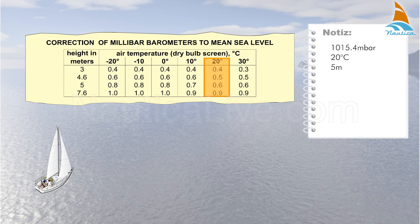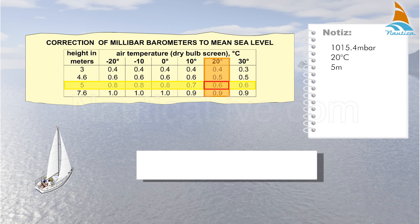By applying the air temperature and height above sea level to the chart, you see that the correction is 0.6 millibars. Add this figure to your barometer reading. Hence the barometer reading corrected to mean sea level is 1015.4 millibars plus 0.6 millibars, which equals 1016 millibars.